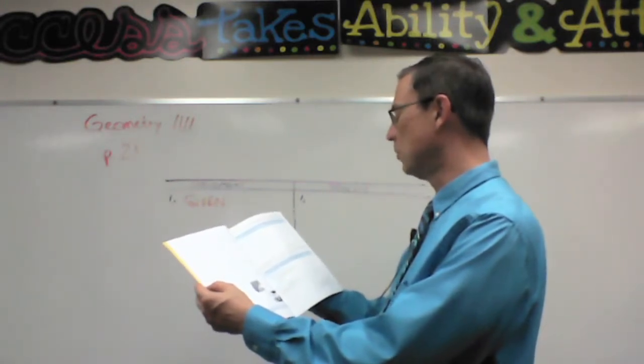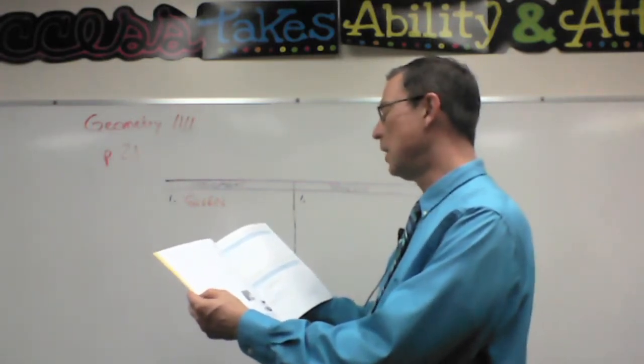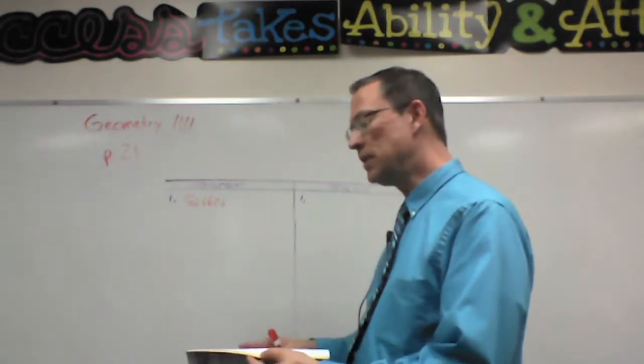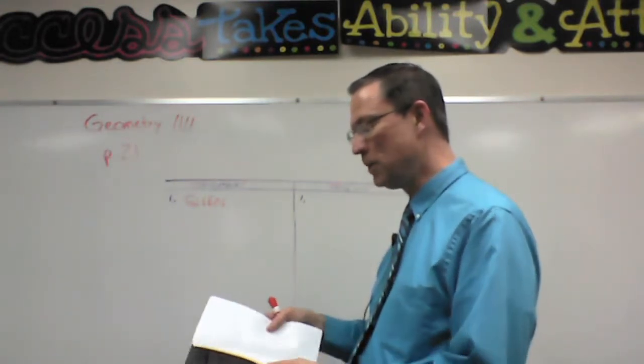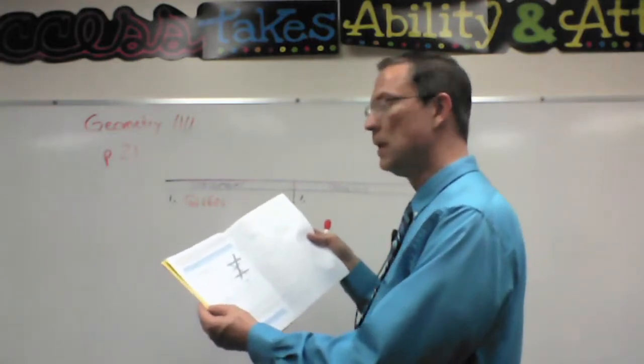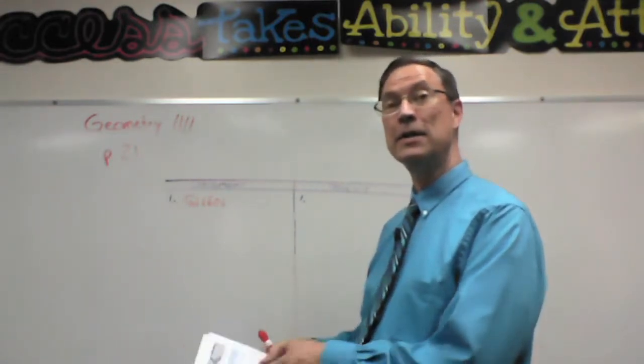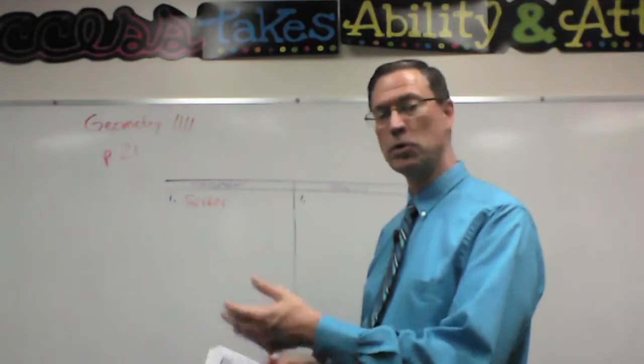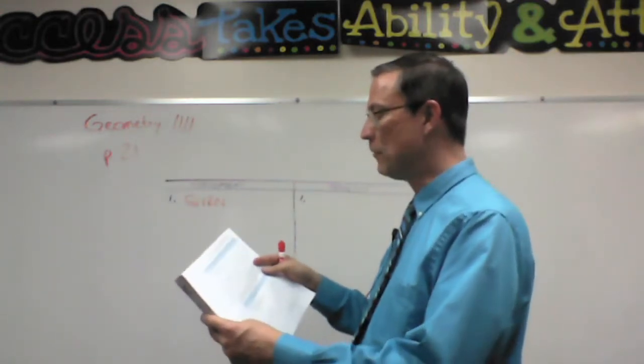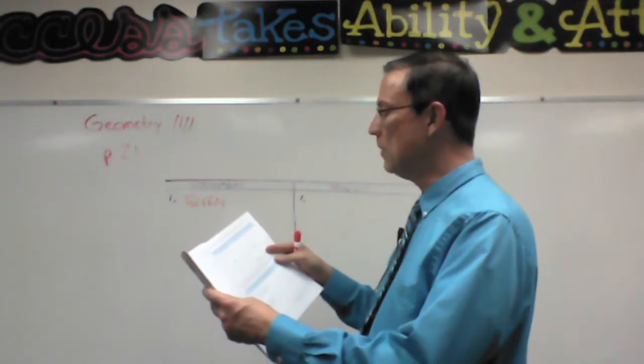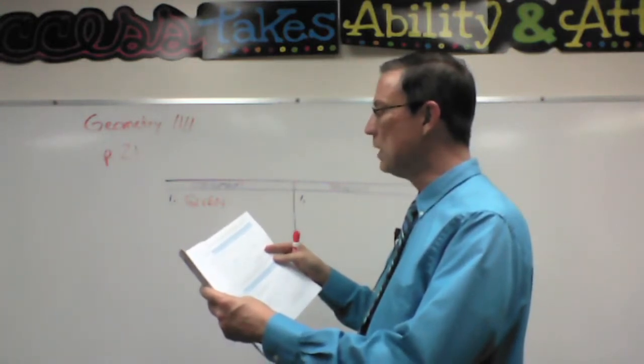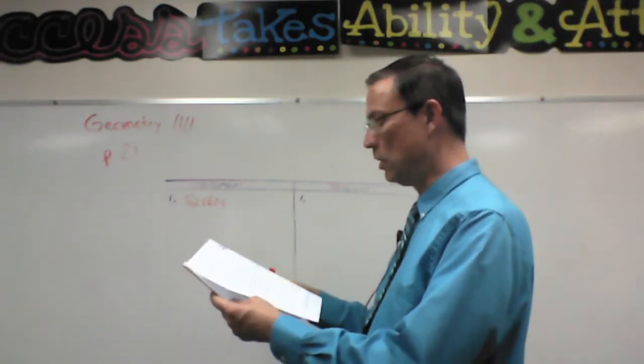And Theorem 16 says if a transversal intersects two lines so that the interior angles on the same side of the transversal are supplementary, then the lines are parallel. So this sounds a lot like Theorems 11 and 12 that we talked about back on page 11 and 12, and that's kind of the converse though. So if we can prove that two angles are congruent, then we can prove that the lines are parallel.